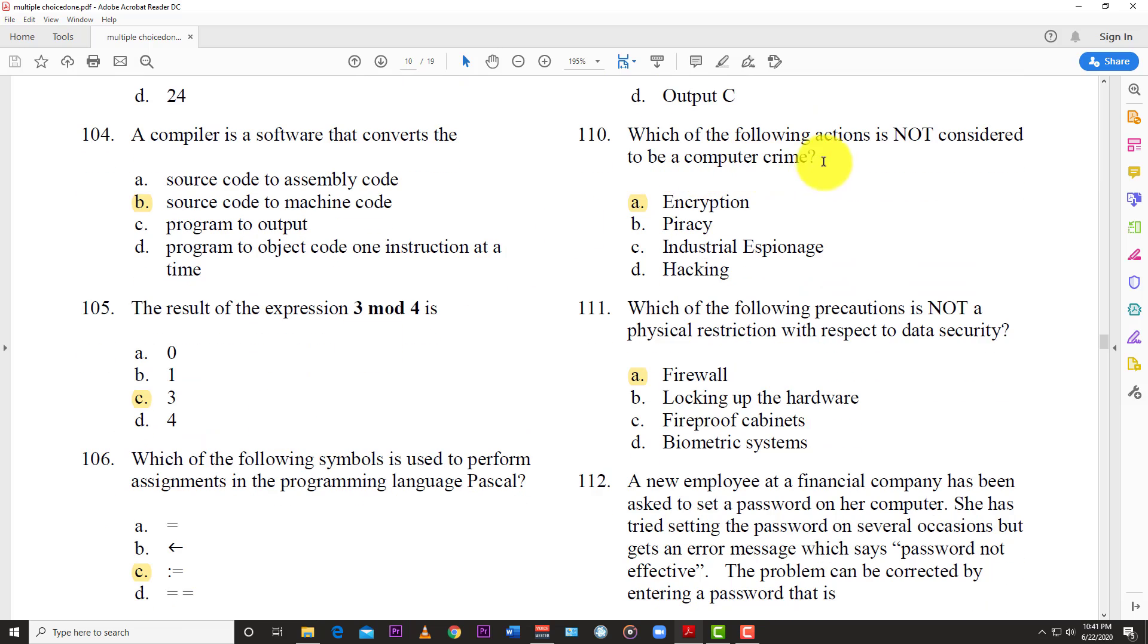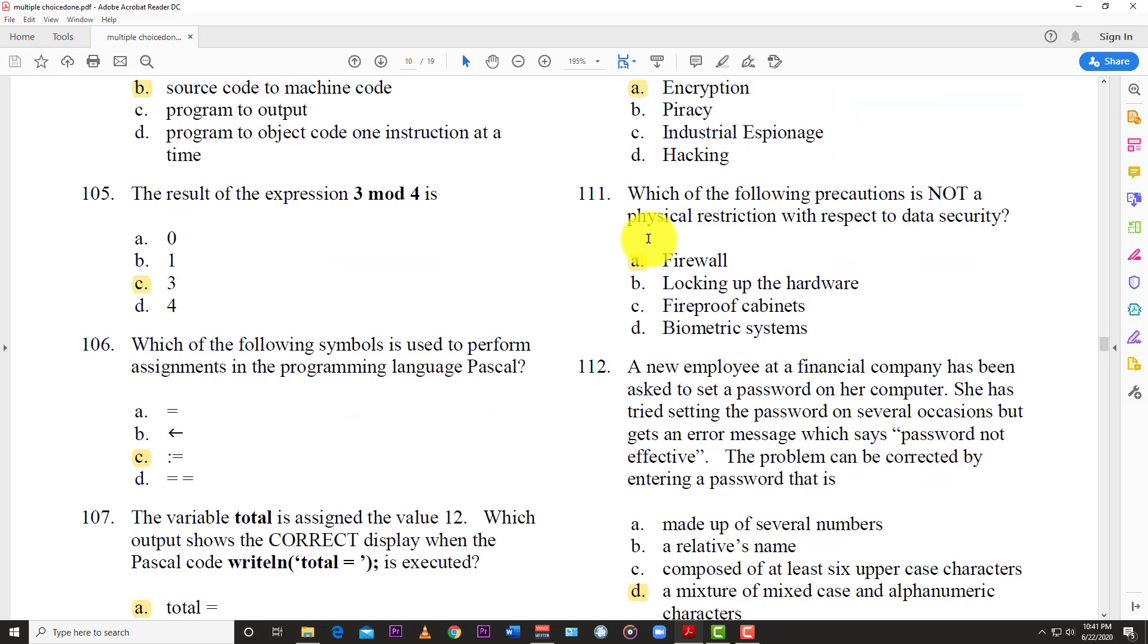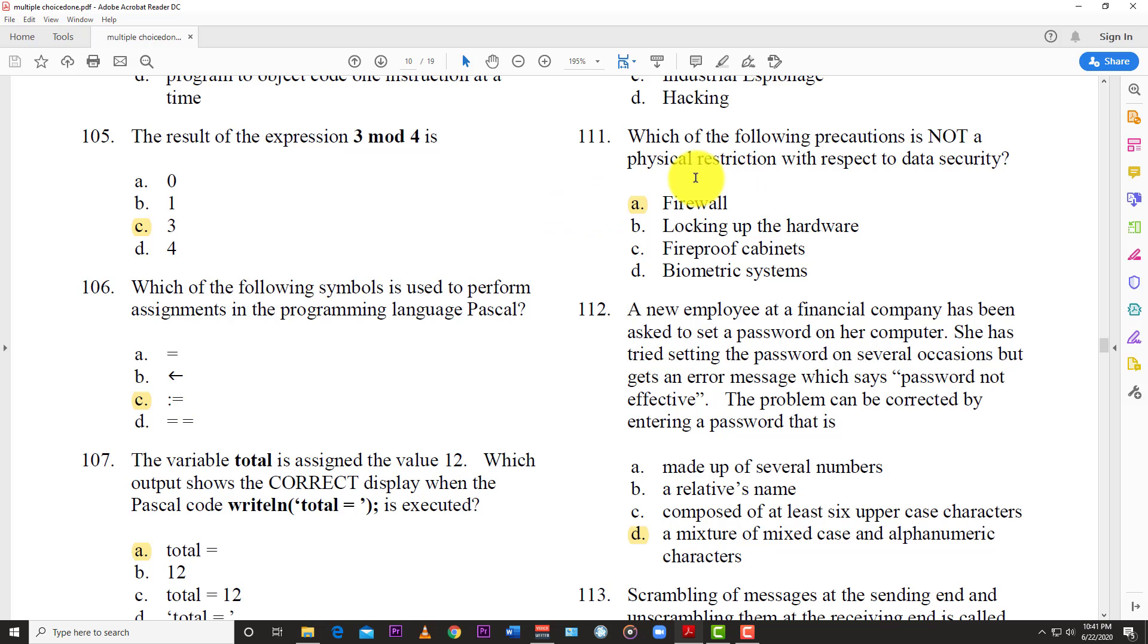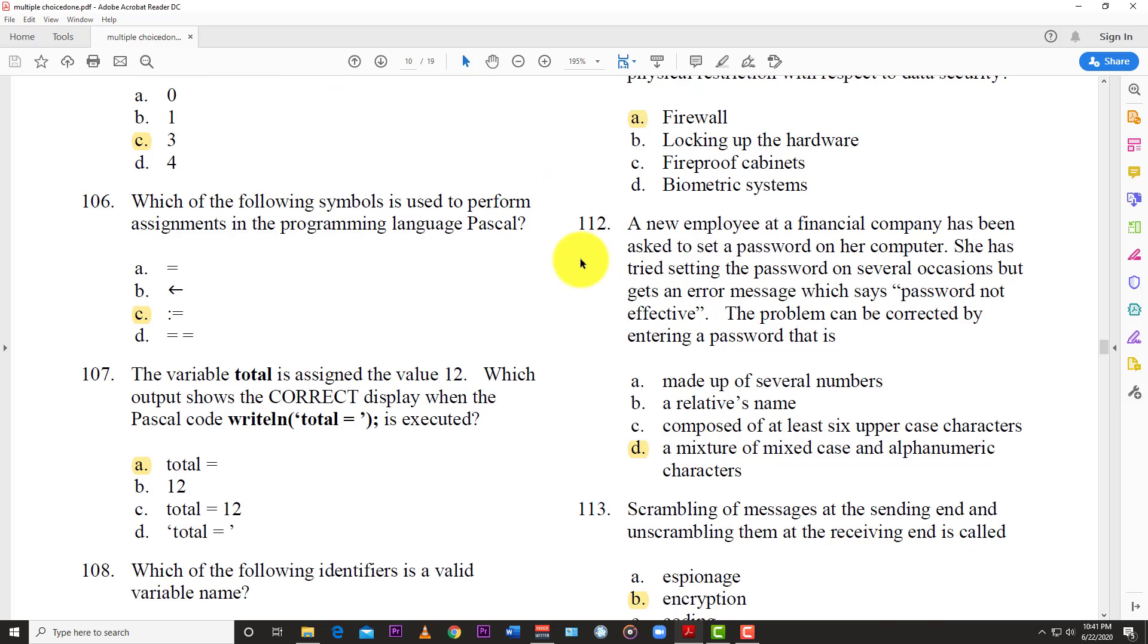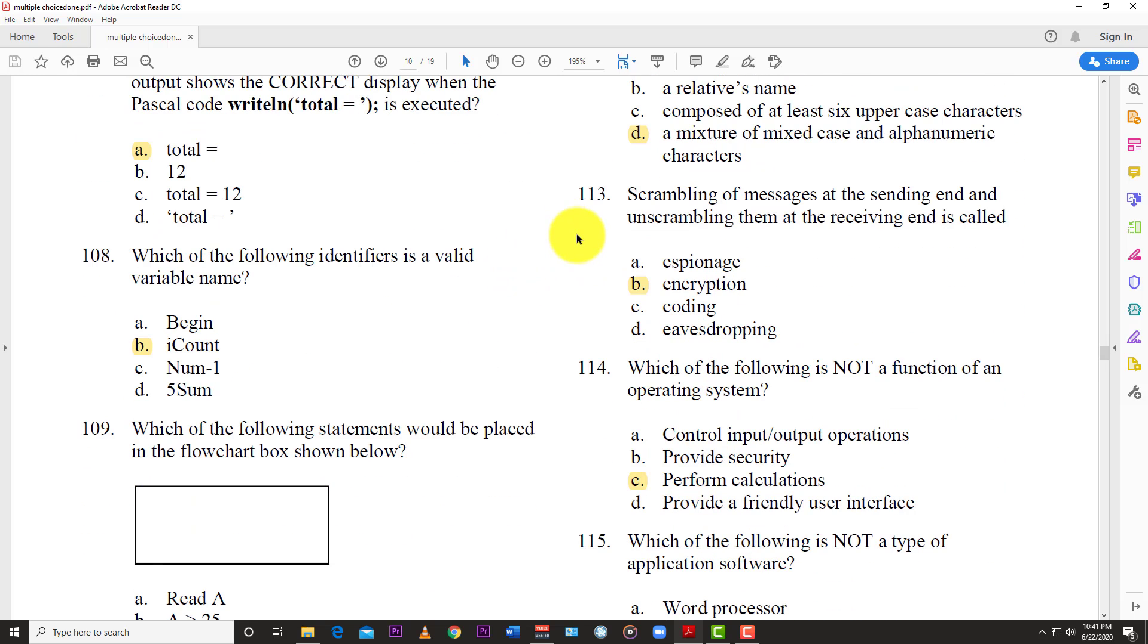Number 110: Which of the following action is not considered to be computer crime? And the answer is A, encryption. Number 111: Which of the following precautions is not a physical restriction with respect to data security? And the answer is A, a firewall. Firewall is software. Number 112: A new employee at the financial company has been asked to set a password on her computer. She has tried setting the password on several occasions but gets an error message which says password not effective. The problem can be corrected by entering a password that is D, a mixture of mixed cases and alphanumeric characters. Number 113: Scrambling of messages at the sending end and the unscrambling them at the receiving end is called B, encryption.